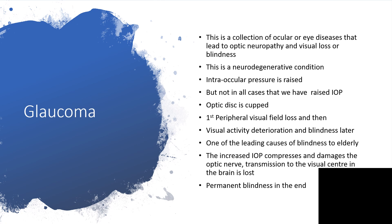Blindness will set in later on. It is one of the leading causes of blindness in the elderly. Now we're considering that same fact in children — the increased intraocular pressure compresses and damages the optic nerve, the transmission of impulses to the brain will be lost, and we'll be dealing with permanent blindness in the end.